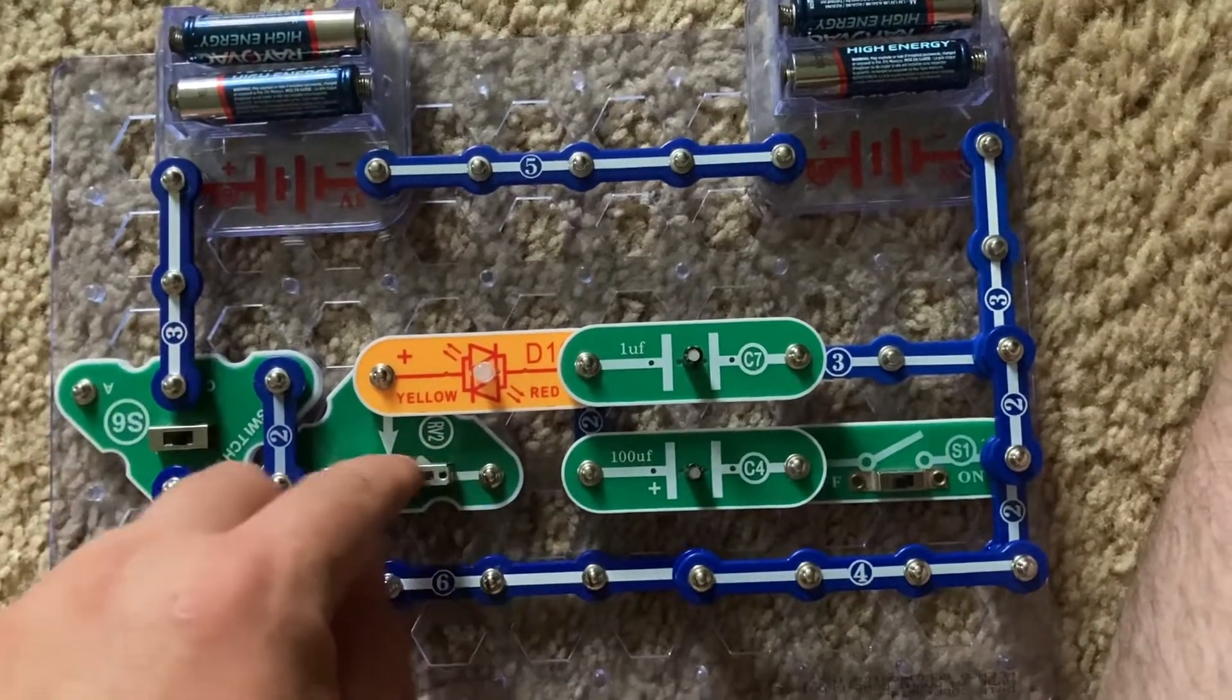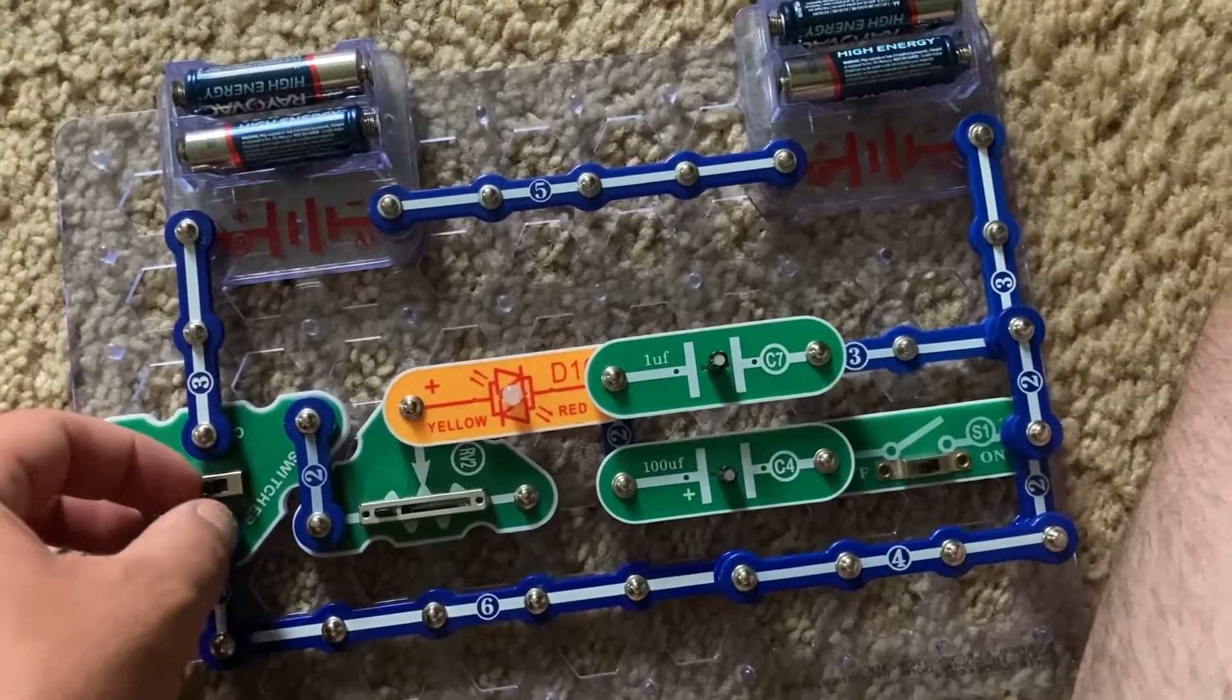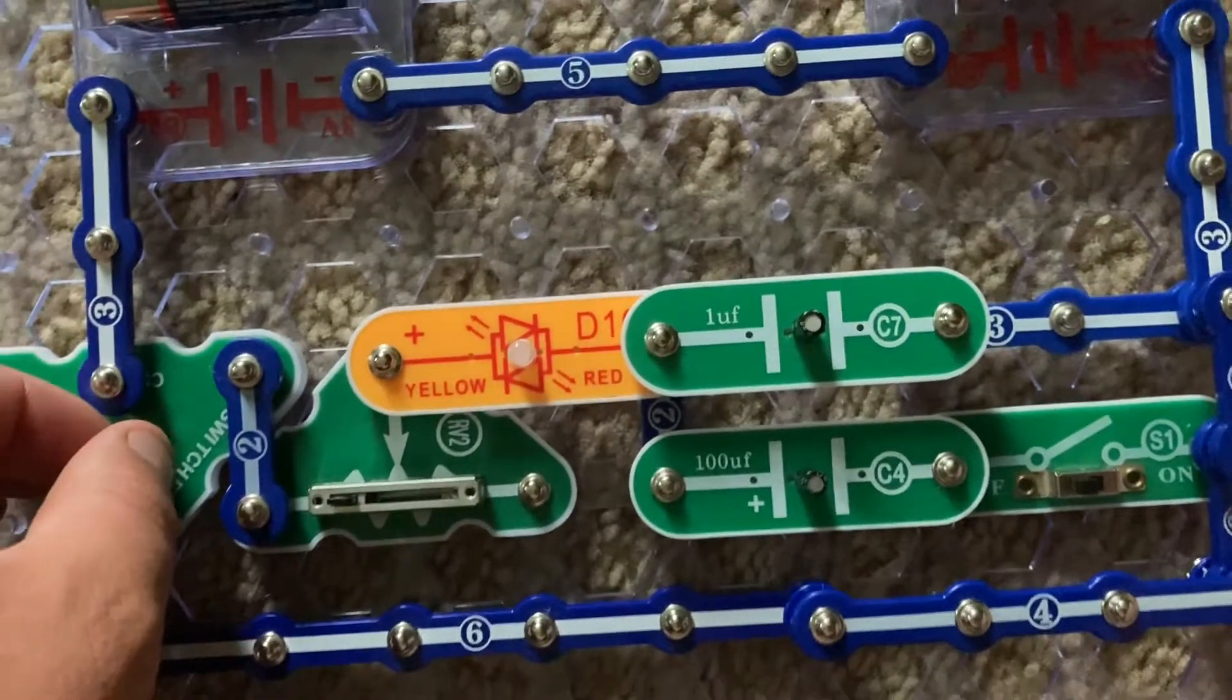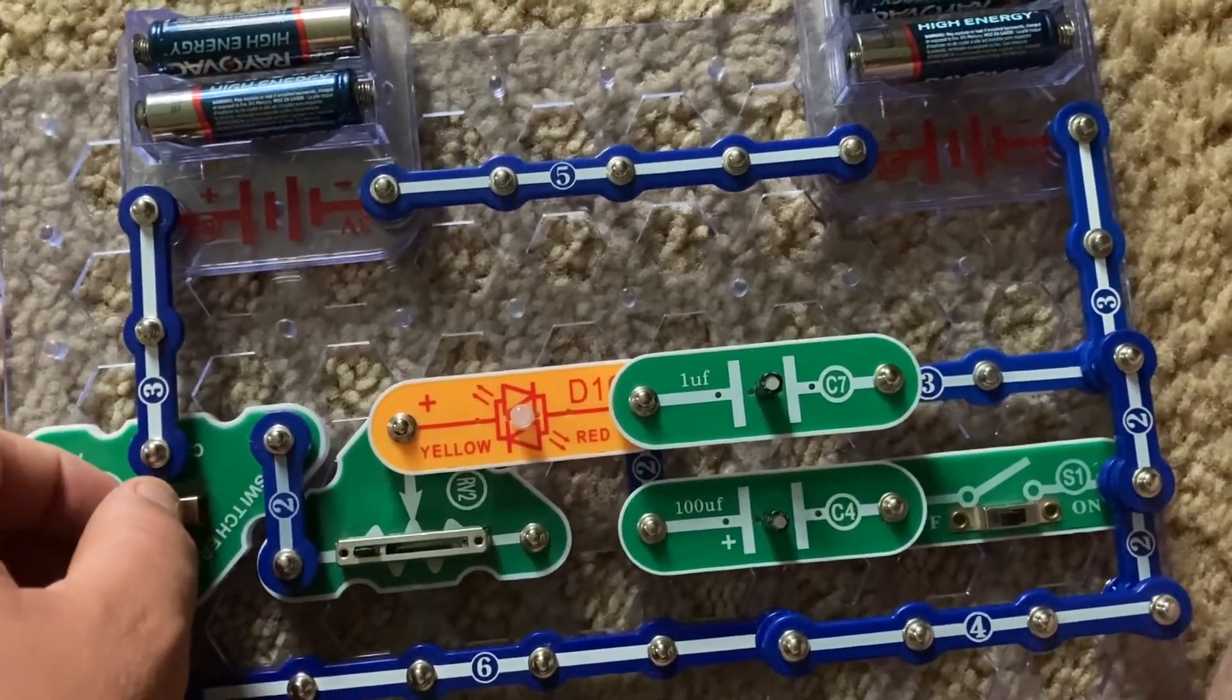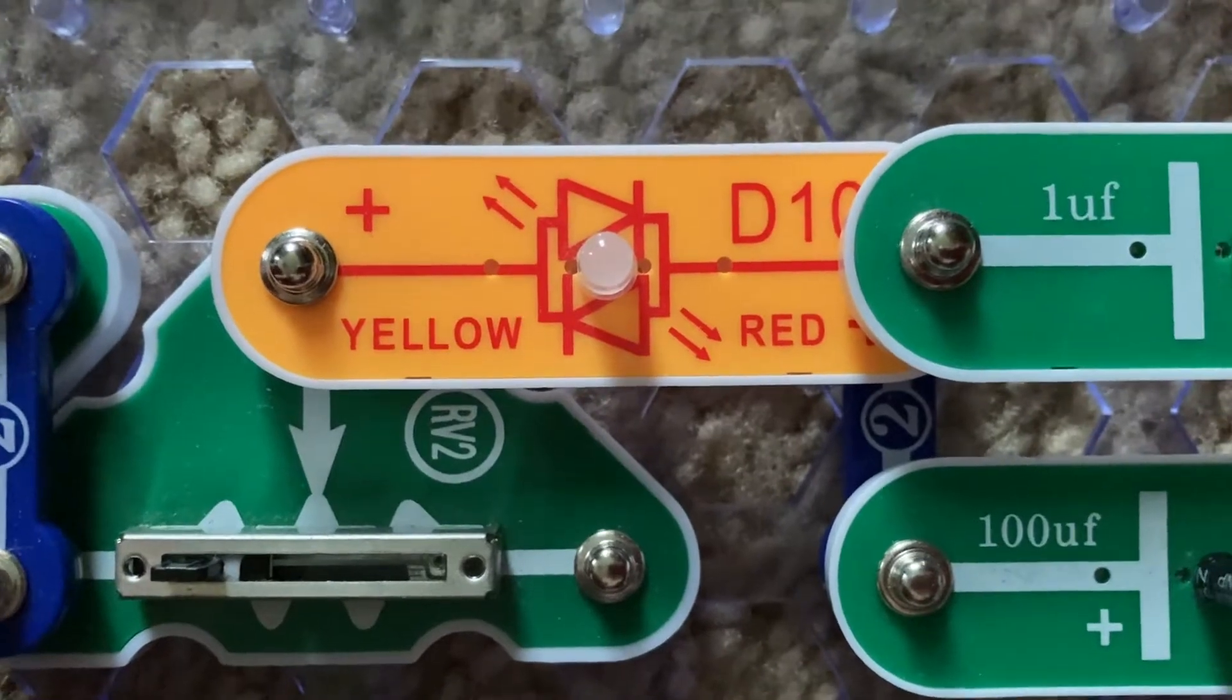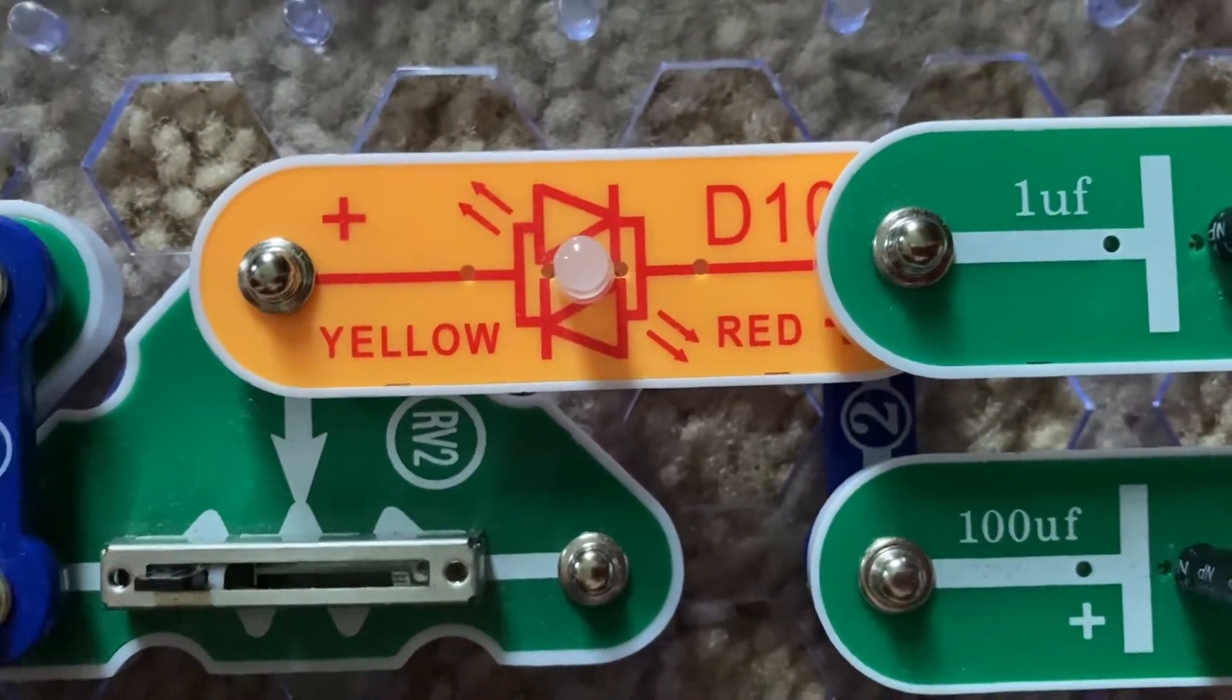With the adjustable resistor to my left, I'm going to move the switcher to my right and the bicolor LED will quickly flash yellow. Then when I move the switcher to my left, it will quickly flash red, although it may be hard to tell. You can see better now with the camera zoomed in on the LED.